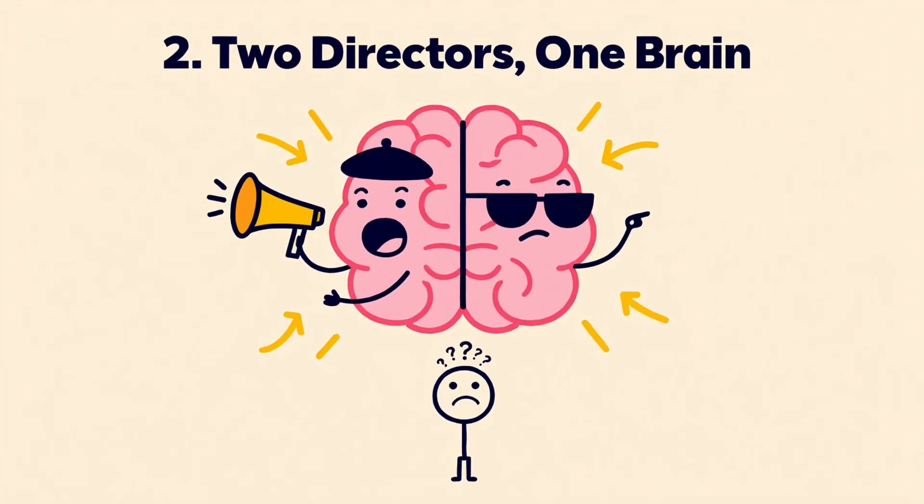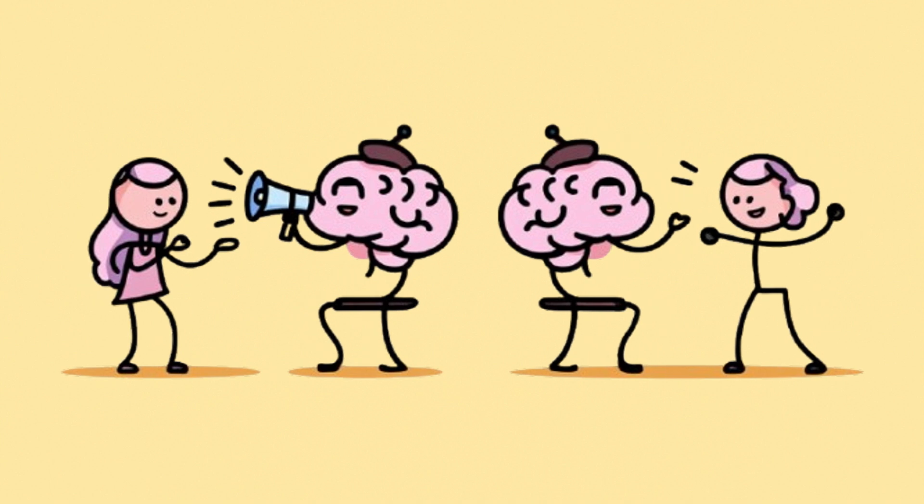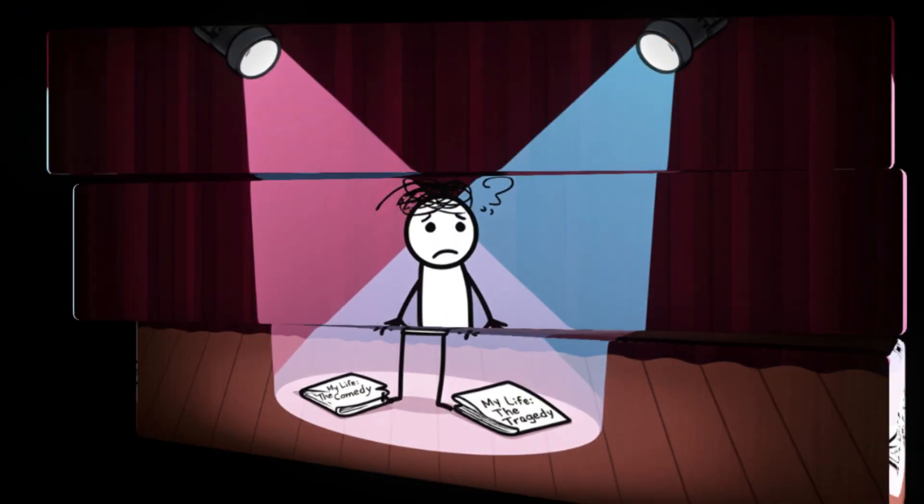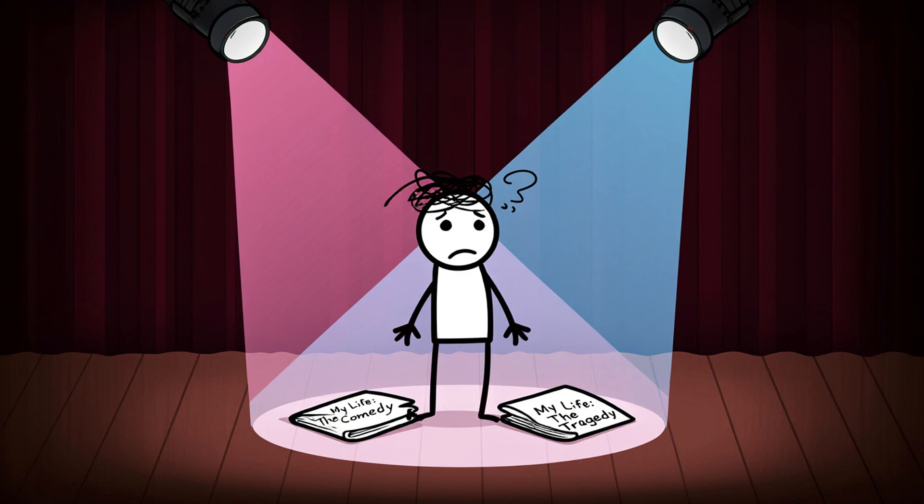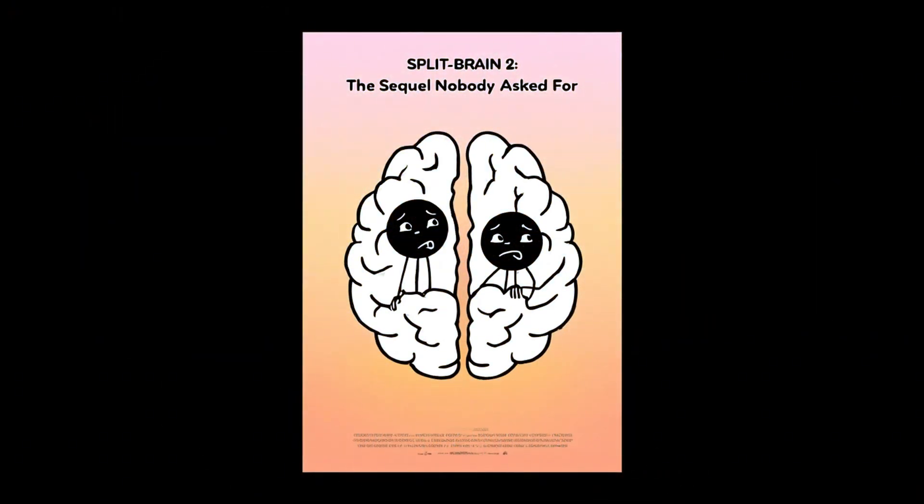Number 2. When your brain has two directors, and they're filming different movies about your life. Imagine this. Your brain isn't one unified genius like in sci-fi movies. It's more like a pair of twins. Two directors working on the same film, called Your Life, except they don't talk to each other. Each one's making their own version of the movie. Same actor, you, different plot lines, and zero communication. Welcome to Split Brain, the sequel nobody asked for.